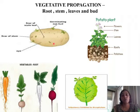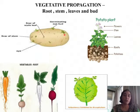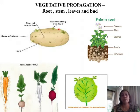The potato that we are eating is nothing but the stem of the plant. If a potato is left for a few days outside, particularly during this season, we find that it develops some buds on it. These buds are also called the eyes of the potato, and if you leave it a few more days, you will even find small leaves coming out. If we remove a portion of this bud and put it into the soil, we will get a new potato plant.